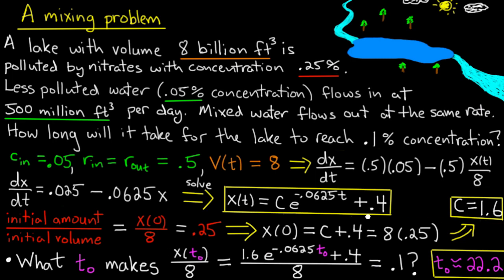Now we've got a formula for x(t). We found that up here. We have C equals 1.6. Plug in the C equals 1.6 into the general formula. That's our formula for x(t). So we simply need to plug in t_0 into that formula and solve this equation: 1.6 e^(-0.0625 t_0) plus 0.4 divided by 8 equals 0.1. Now if you do the algebra here, you get, well at least I got, t_0 approximately equal to 22.2. I round it up.